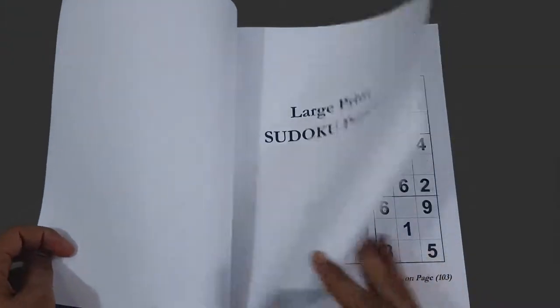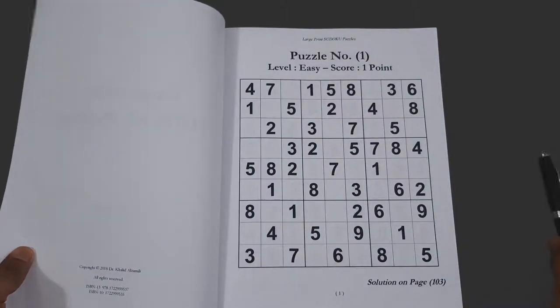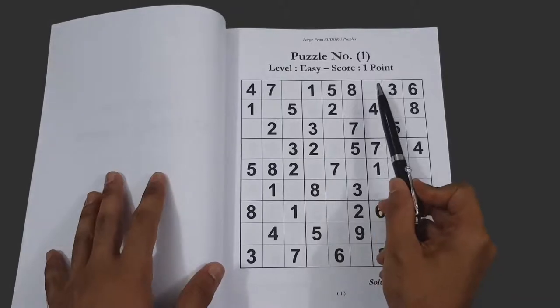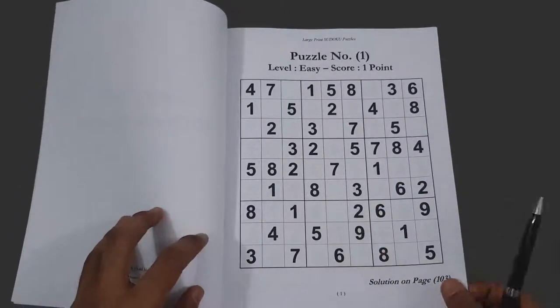Opening the book, you start with the puzzles with easy difficulty and a score of one point.